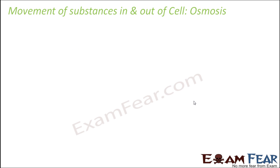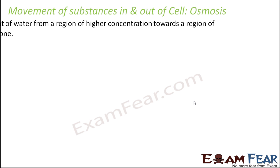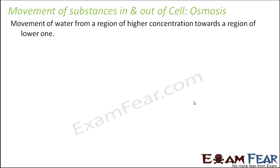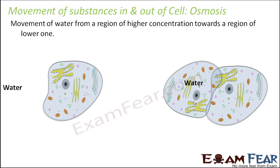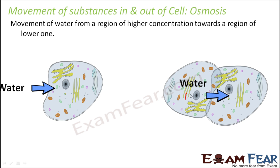Now let us look at the process of osmosis. The concept of osmosis and diffusion is essentially the same, except that osmosis talks only about the movement of water — specifically, movement of water from a region of higher concentration towards a region of lower concentration. So if the concentration of water is higher outside, it will start moving into the cell; similarly, if water concentration is higher in one cell, it will move into the neighboring cell.